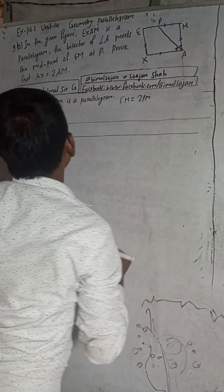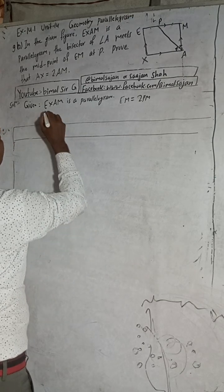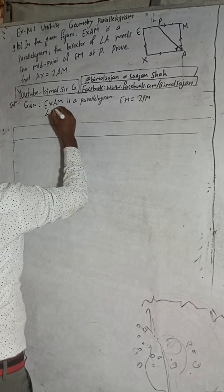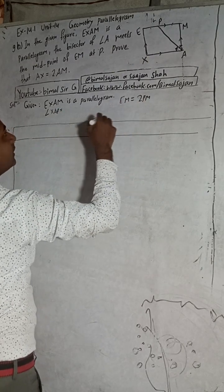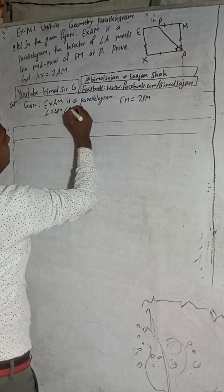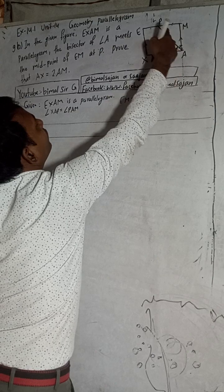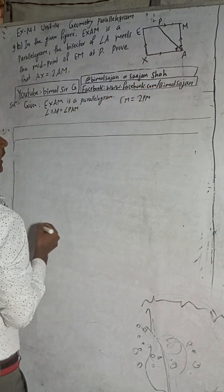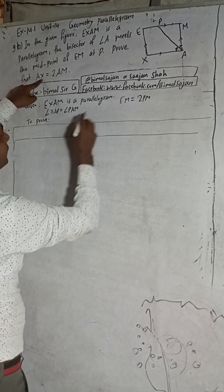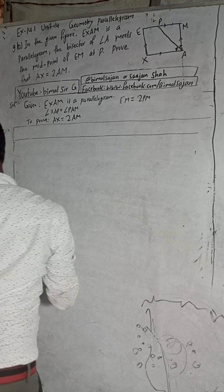Since AP is the angle bisector, angle XAP equals angle PAM. To prove: AX equals 2AM. Now let me begin the solution.